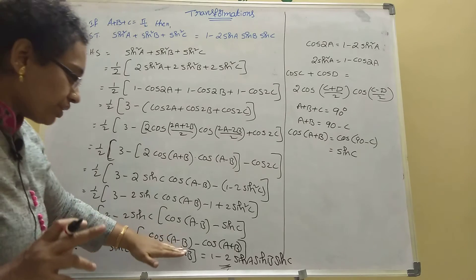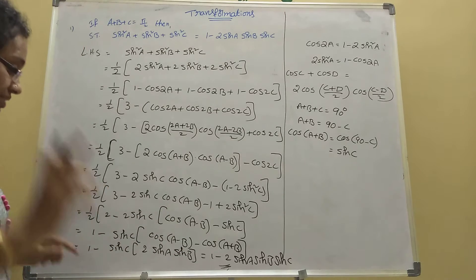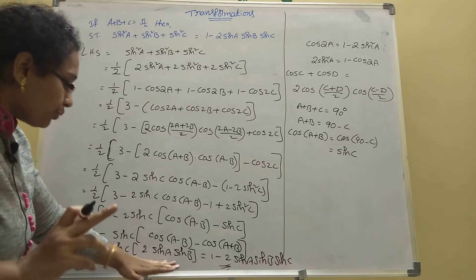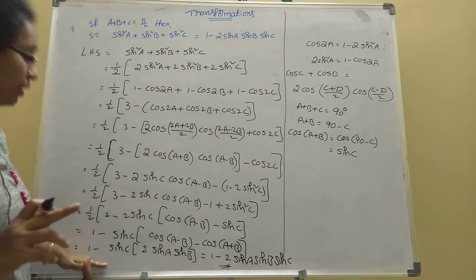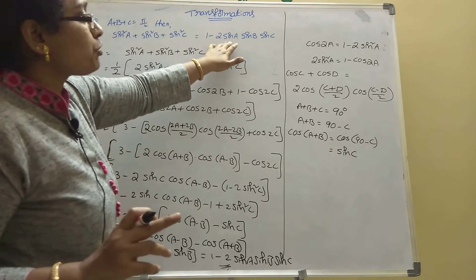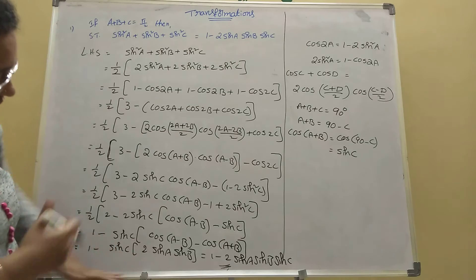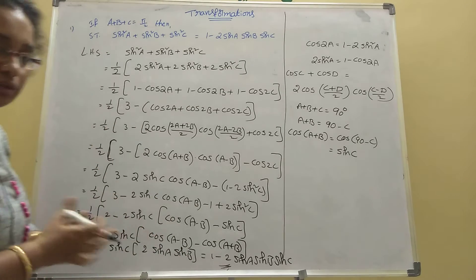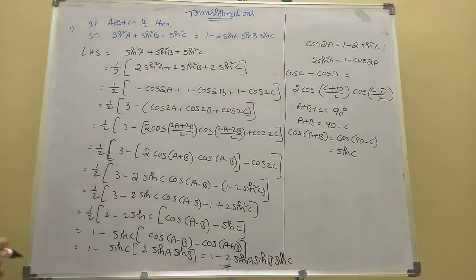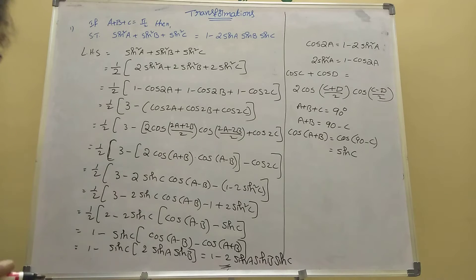This is a very important 7 mark sum. Even if you forget the formula, once you write 1 minus sin C common, the remaining 2 sin A sin B gives you the total answer.